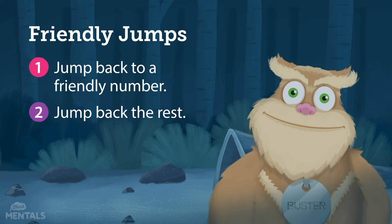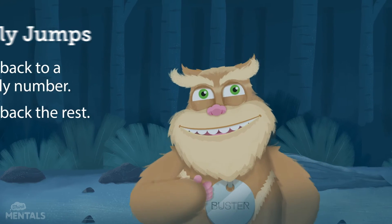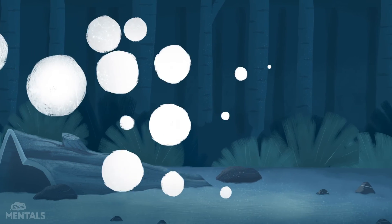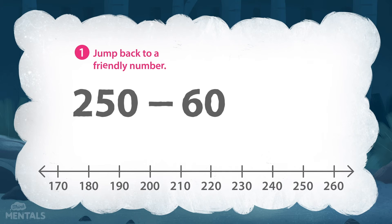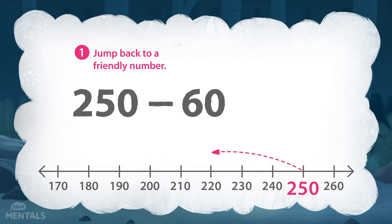Let's use these steps to work through an example: two hundred and fifty minus sixty. It helps to imagine a number line. Step one is to jump back to a friendly number. So we need to jump back from two hundred and fifty to another friendly number. In this case, we can jump back fifty to the friendly number two hundred.